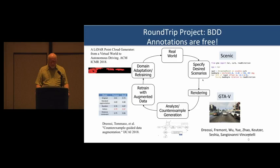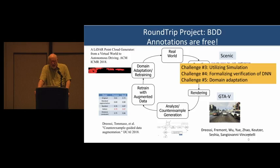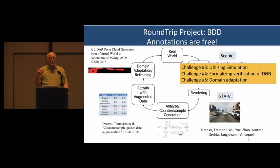So there are really three challenges here. The first is utilizing simulation effectively — GTA V is not something you can use for commercial use. The second is something approaching formal verification of deep neural networks, or at least bringing more formal methods to that verification. And the third is domain adaptation: how do we take data gathered in simulation land and bring it back to the real world?